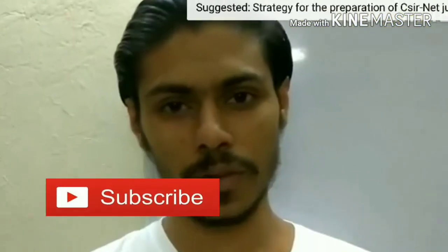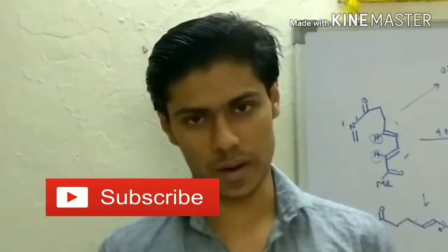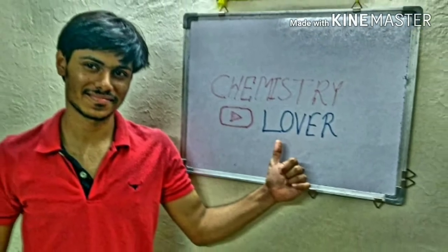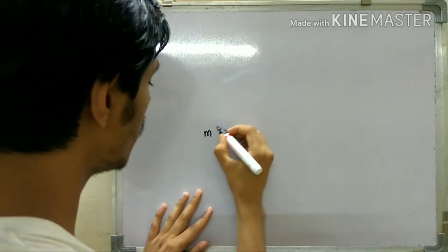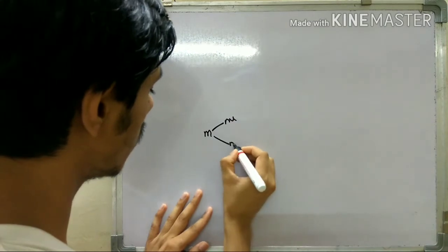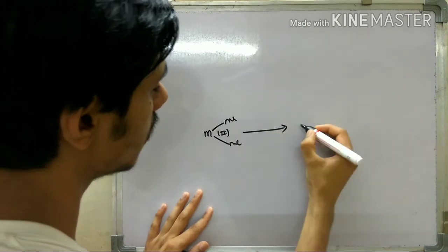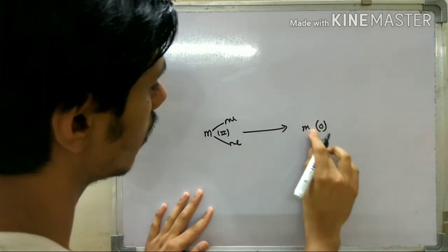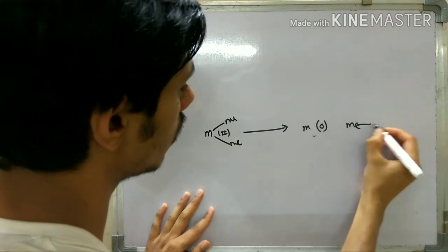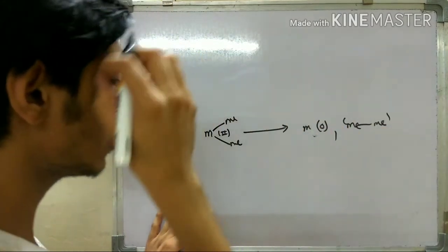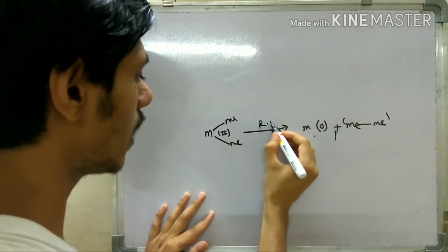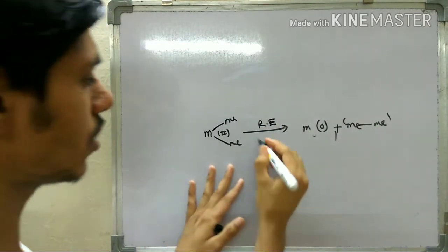Let's start with this topic. For example, if you have any substrate with two methyl groups on the metal and it is in the +2 oxidation state, it can undergo reductive elimination to give the metal back in the zero oxidation state, and the two methyl groups will combine. This is called reductive elimination — it is just the reverse of oxidative addition.